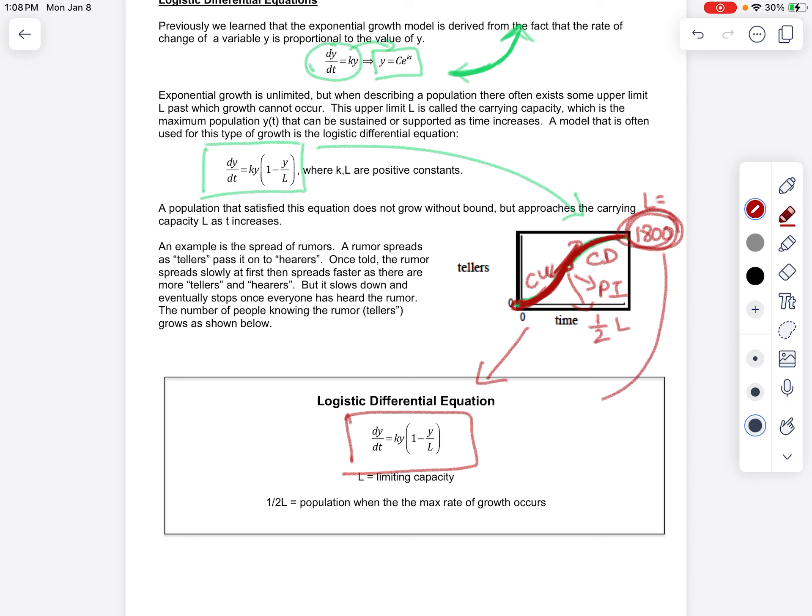So we need to understand the characteristics of the graph, and then also tie it to the differential equation. This limiting capacity in this problem, that 1800, is this number right here. That L.